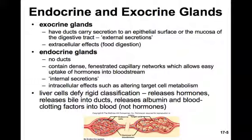Endocrine glands have intercellular effects, like altering the target cell metabolic rate. The liver cells defy any rigid classification — they release hormones, but we'll also learn that they release bile into ducts that aids in digestion, and they release albumin and blood clotting factors into the blood, which are not hormones. So the liver functions as not only an endocrine gland, but in many other capacities as well.